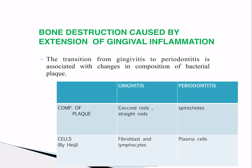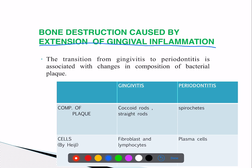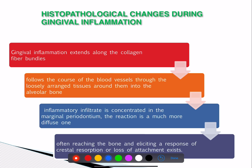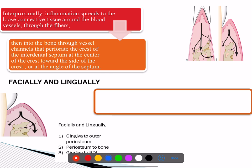Bone destruction is caused by extension of the gingival inflammation. In gingivitis you have more cocci and straight rods; in periodontitis you have more spirochetes. Fibroblasts and lymphocytes are replaced by plasma cells. The gingival inflammation extends into the collagen fiber bundles and follows the course of blood vessels through loosely arranged tissue around them into the alveolar bone.